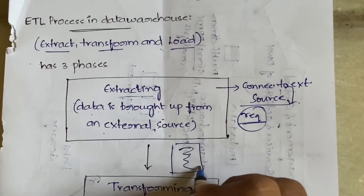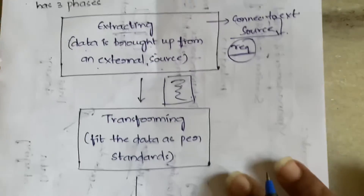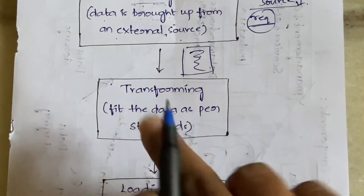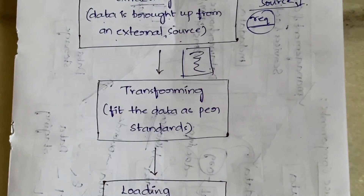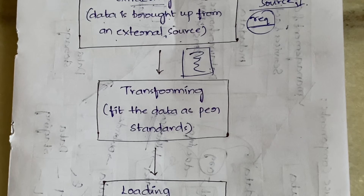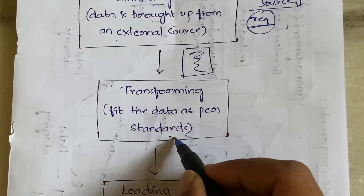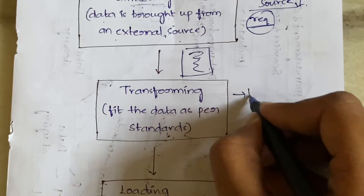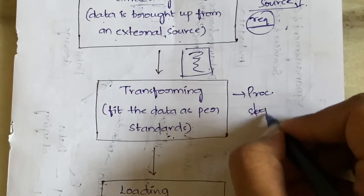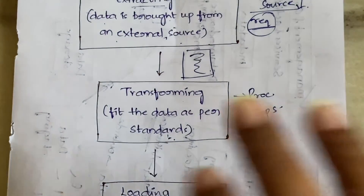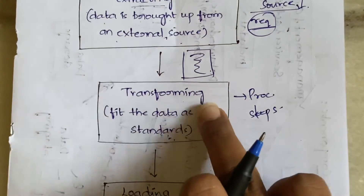After extraction, the data is sent into the transformation phase. Here, we fit the data to particular standards. You cannot present the data in whatever format you want; there are specific standards for size — for example, up to a certain number of megabytes or gigabytes. To fit the data into that standard format, we perform some processing steps. This is the transformation part.